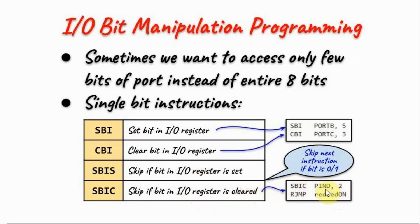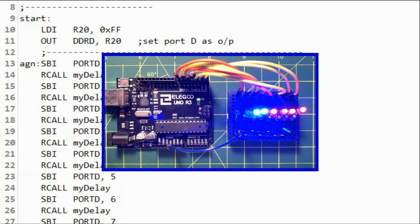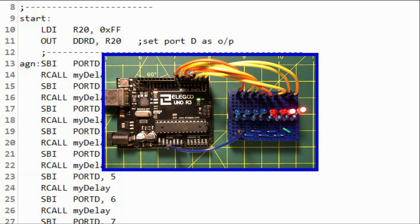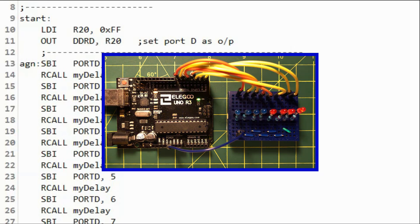In this example, we are inputting the bit in pin 2 of port D into the pin register and checking the value. If it is zero or cleared, the next instruction will be skipped; otherwise, the next instruction will be executed. In another example, we have eight LEDs connected to port D, initialized as an output port. We are setting the pins of the port one by one starting from the least significant bit, introducing a delay between each set. At the end, we clear all the bits and the process is repeated indefinitely.